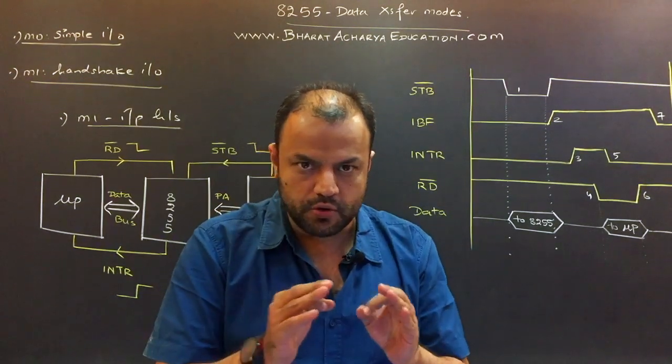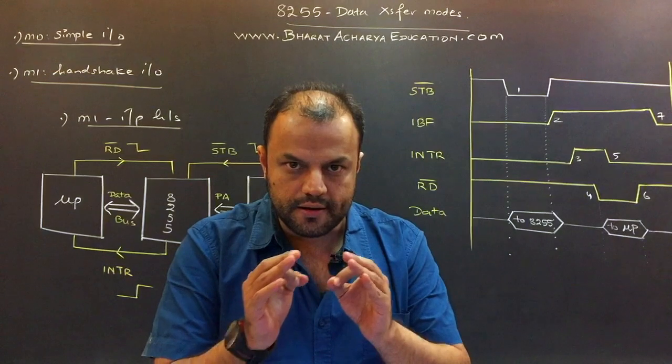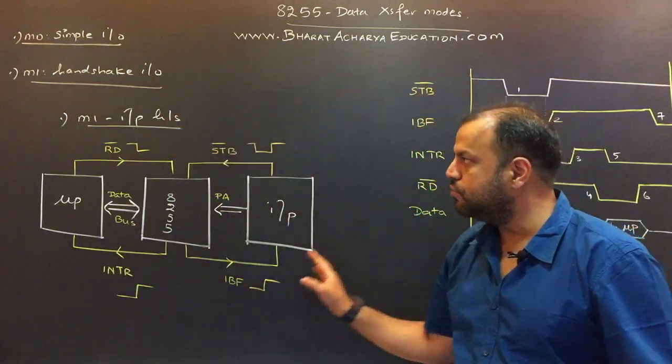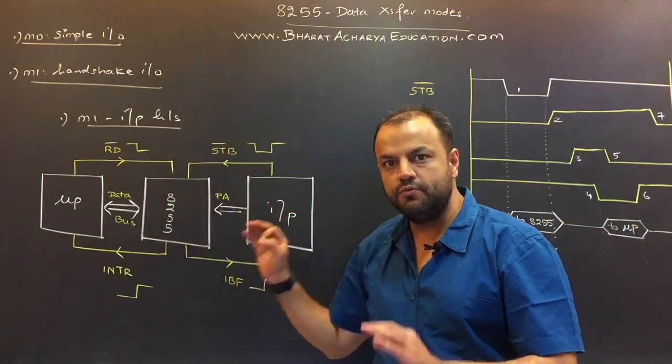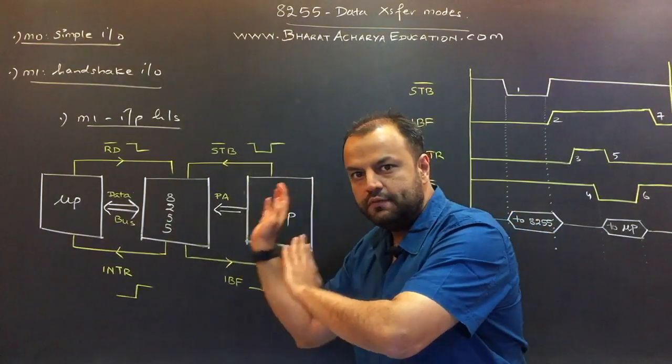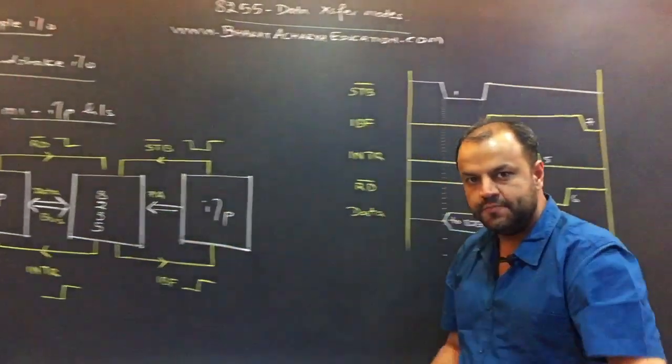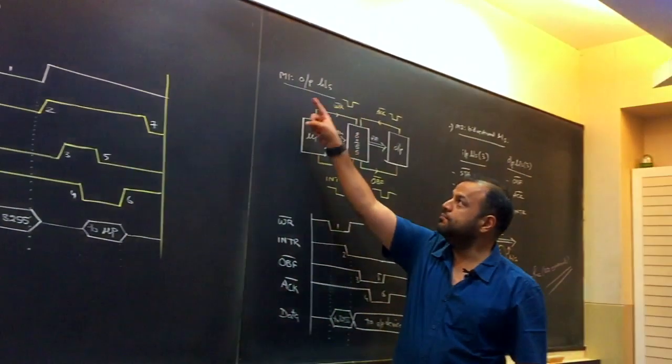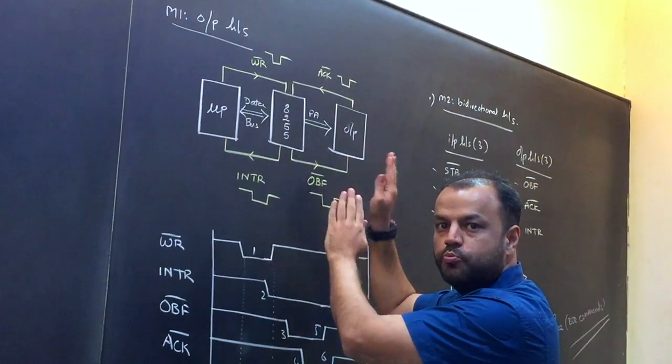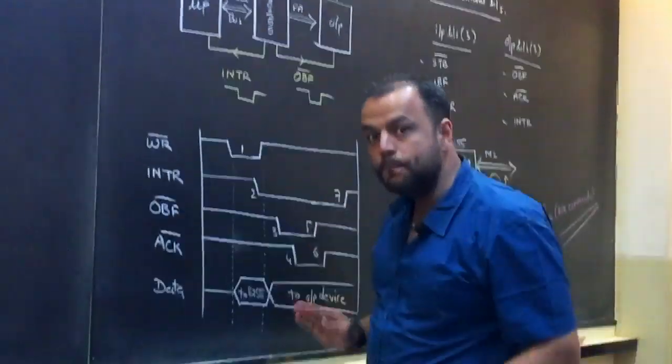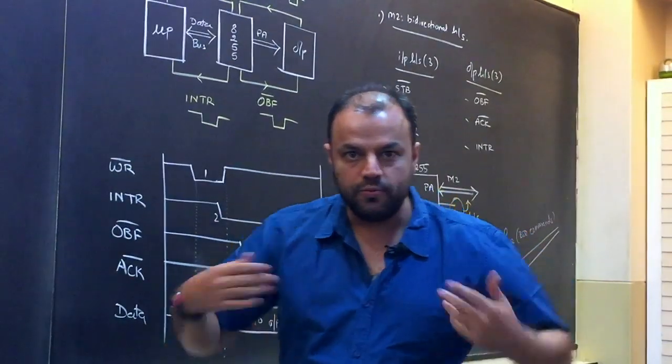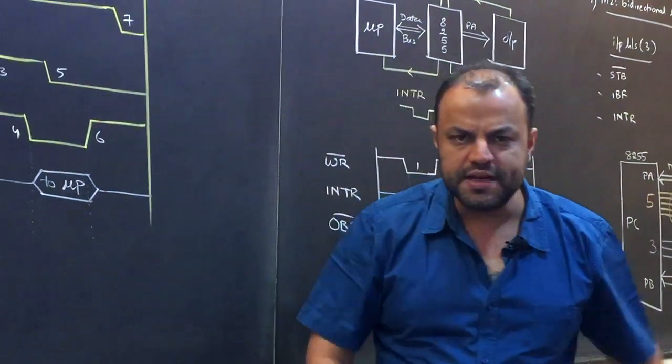Mode 2 is the same as mode 1. The only difference is when you are in mode 1, a port which is programmed in mode 1 will do handshaking in one direction for the rest of its life. Either a port is programmed in mode 1 input handshaking—that means that port will be connected to an input device like a keyboard or a mouse, so lifelong it will do input handshaking for the processor. Similarly, a port can be programmed in mode 1 output handshaking mode, meaning lifelong it will only do output handshaking.